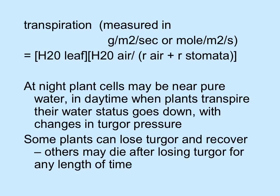At night, when the plant equilibrates with the soil, plant cells may be nearly pure water in their vacuoles. In the daytime, when they're transpiring and photosynthesizing, water status goes down with changes in turgor pressure as water is pulled up through the plant. If the soil gets too dry and the plant loses too much water, it may wilt — losing turgor. Some plants can wilt and recover, but others, if they lose turgor for too long, may die or lose parts of themselves.